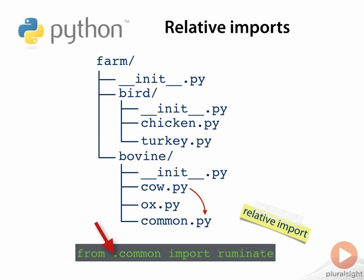The leading dot in the relative form means the package containing this file, or in other words, the `farm.bovine` package. So the relative form is really just saying `from farm.bovine.common import ruminate`.